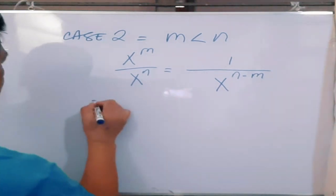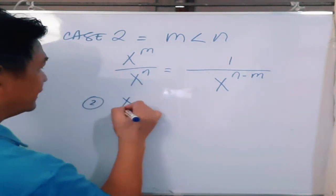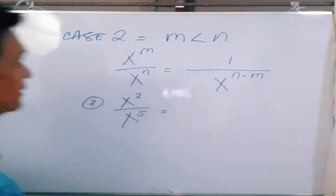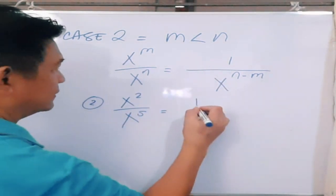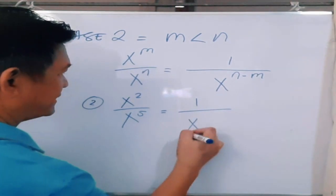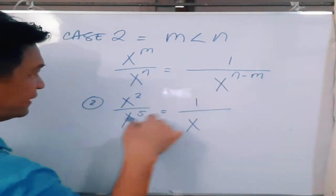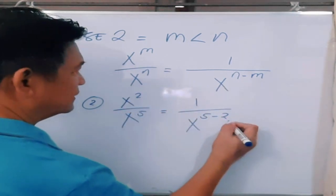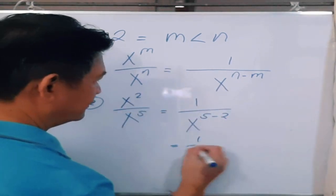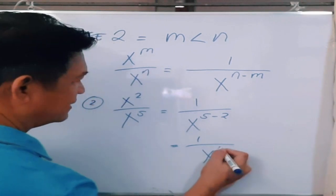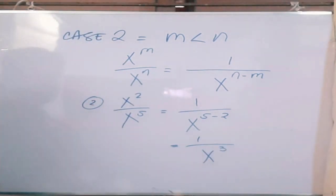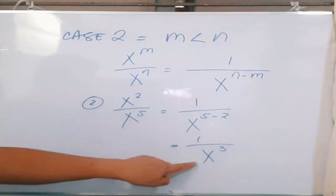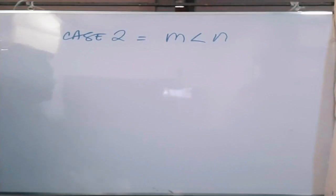For example number 2, when you have x squared over x raised to the fifth power, that would be 1 over x raised to n minus m, which is 5 minus 2. That would be 1 over x raised to the third power. So x squared divided by x raised to the fifth power is equal to 1 over x cubed.